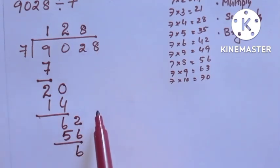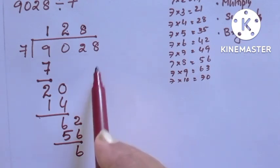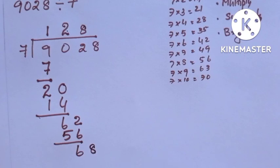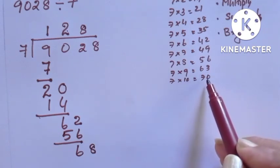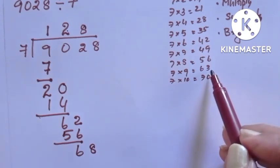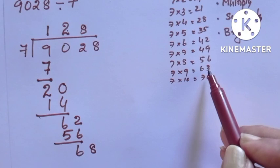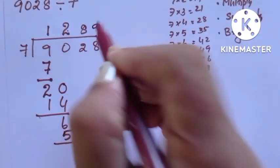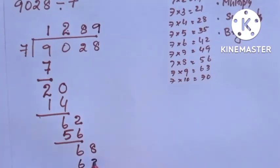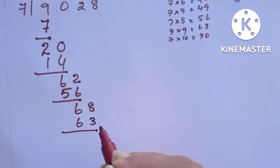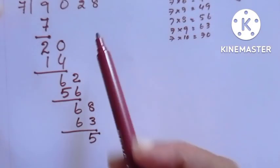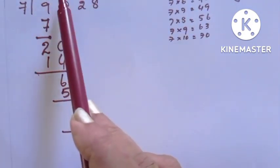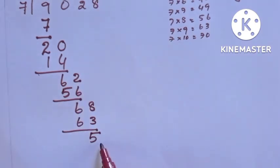Next step: bring down the next digit, which is 8. We write 8 down, so now we have 68. In the table, 70 is there and 63 is there. Since 70 is greater than 68, we take 63. 63 goes 9 times in the 7 times table. We write 9 in the quotient, write 63 below, and subtract: 68 minus 63 equals 5. All digits are finished, so the quotient is 1289 and the remainder is 5.